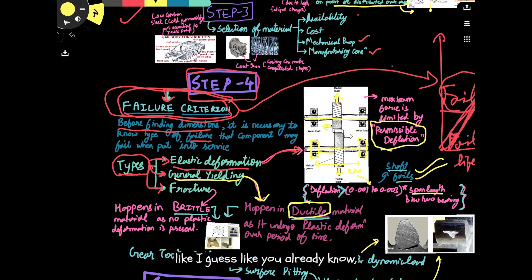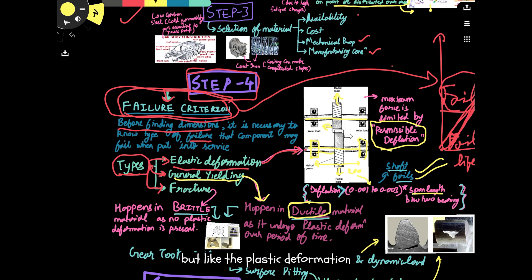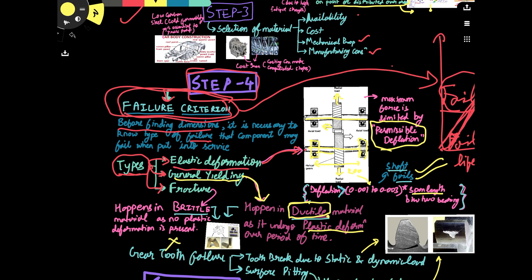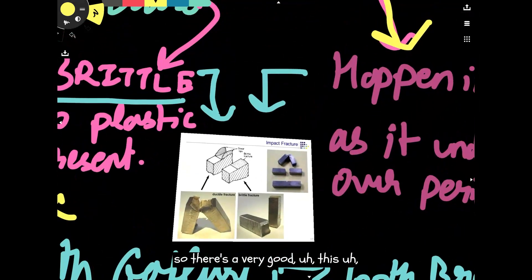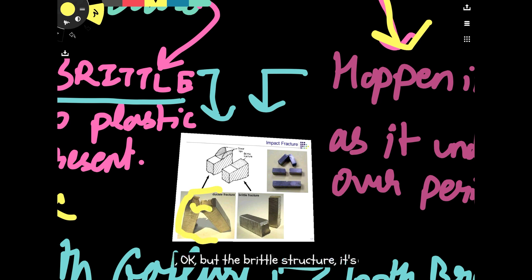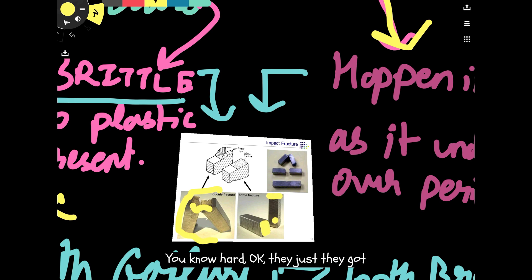General yielding happens only in the case of ductile material. Yielding involves plastic deformation. Brittle material has no plastic deformation — they just fail directly. Ductile fracture shows yielding, whereas brittle fracture is abrupt — they just get failed suddenly.